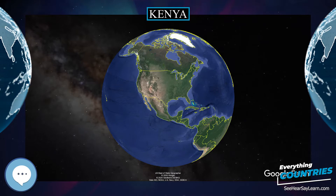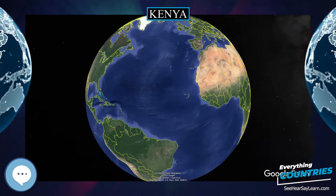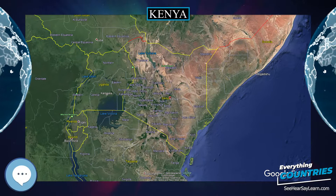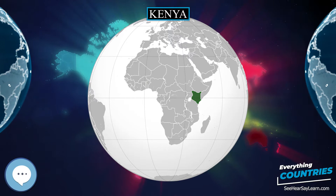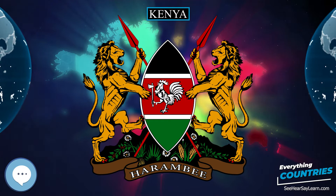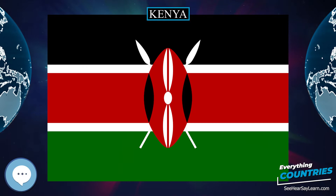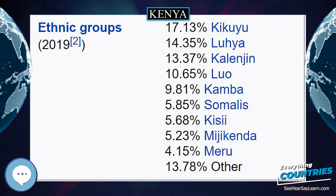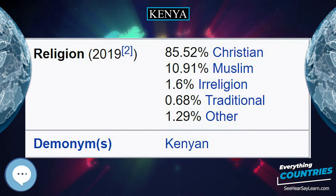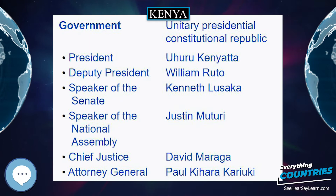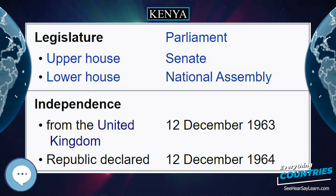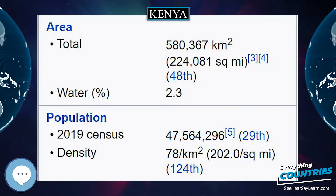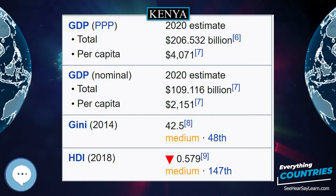Kenya has considerable land area devoted to wildlife habitats, including the Maasai Mara, where blue wildebeest and other bovids participate in a large-scale annual migration. More than 1 million wildebeest and 200,000 zebras participate in the migration across the Mara River. The Big Five game animals of Africa — the lion, leopard, buffalo, rhinoceros, and elephant — can be found in Kenya, and in the Maasai Mara in particular. The annual animal migration occurs between June and September with millions of animals taking part, attracting valuable foreign tourism. Two million wildebeest migrate a distance of 2,900 kilometers (1,802 miles) from the Serengeti in neighboring Tanzania to the Maasai Mara in Kenya in a constant clockwise fashion, searching for food and water. The Serengeti migration of the wildebeest is listed among the seven natural wonders of Africa.